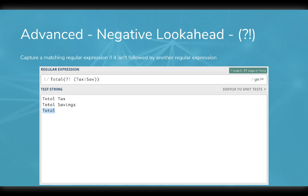If we were to just key off of the word total, we would capture all three of these amounts. So we can use a negative look ahead to only key off of the word total if it isn't followed by a space and the word tax or savings.